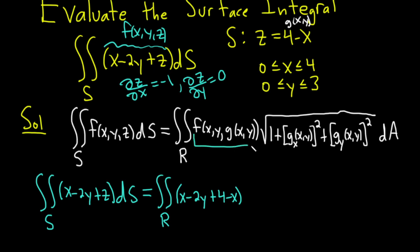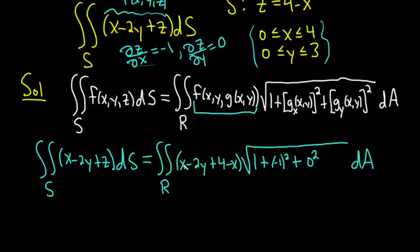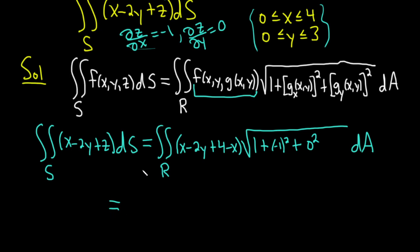So we've done this part here. You just basically take the z and put it where the z is. And then here we have the square root. So it'll be 1 plus negative 1 squared plus 0 squared, and then we have dA still. The really nice thing about this problem is they already tell us the region R, so it makes it really easy. So this is an iterated integral now. Let's integrate with respect to y first. So we'll go from 0 to 3 and then x, 0 to 4.